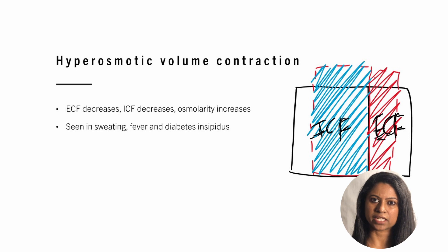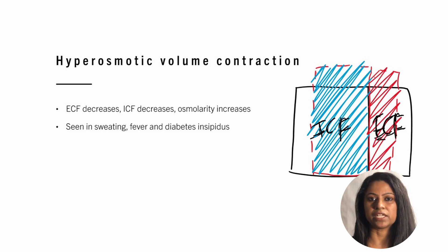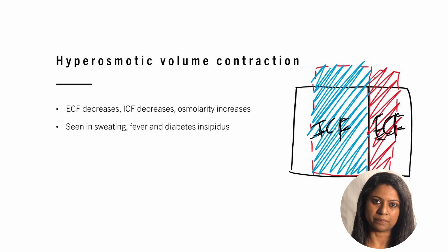Hyperosmotic volume contraction is seen in fever, sweating, and diabetes insipidus. In all of these conditions, the body is losing plain water without electrolytes. It results in an increase in osmolarity in the ECF, which leads to a fluid shift from the ICF into the ECF.